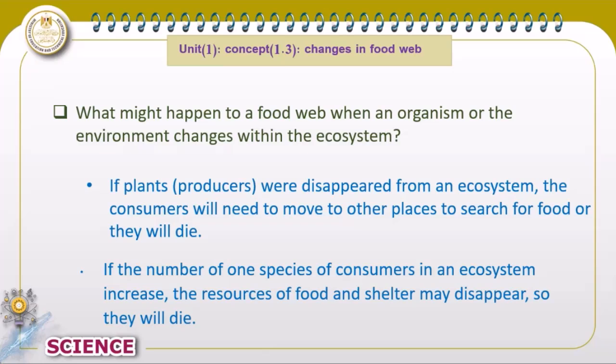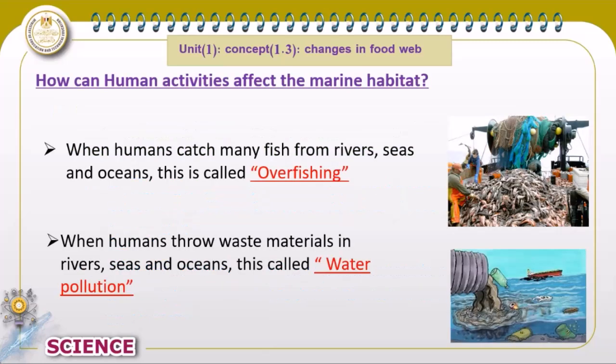The resources will disappear so there is no food, and the organisms will die. If there is no producer, the consumer must move or they will die. But if the consumer population increases, the food may disappear because there are more consumers, so their number will decrease or they will finally die — they must move to another ecosystem to find more food.